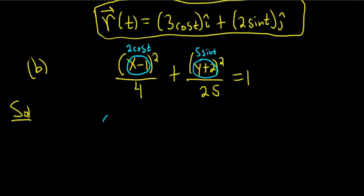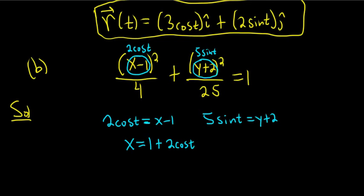So we start by taking 2 cosine t and setting that equal to x minus 1, right? So you replace the entire thing, the whole x minus 1, with 2 cosine t. Likewise, we take 5 sine t and we set that equal to y plus 2. Solving the first equation for x, we add 1 to both sides. So we get 1 plus 2 cosine t. Solving the second equation for y, we get y equals—so subtracting 2—negative 2 plus 5 sine t. So those are our parametric equations for this ellipse.